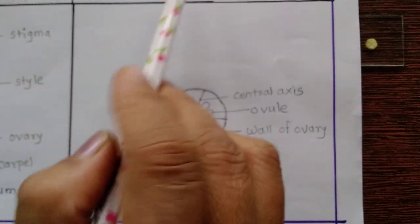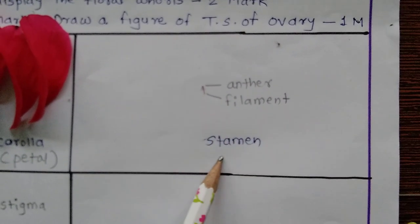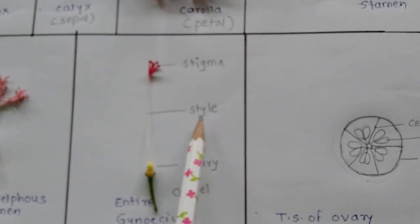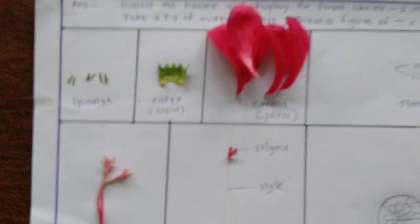Label the ovary and ovules. A kidney-shaped structure is called the anther and the thread-like structure is the filament — this is a single stamen. In the entire gynoecium, a single carpel consists of stigma, style, and ovary. This is the complete experiment to display the floral whorls and show to the examiner.